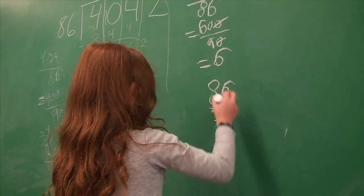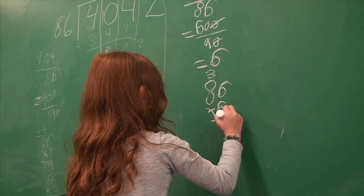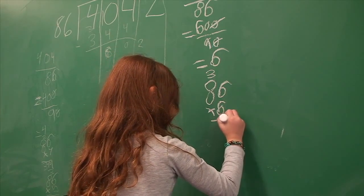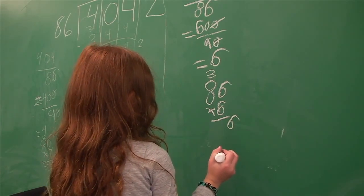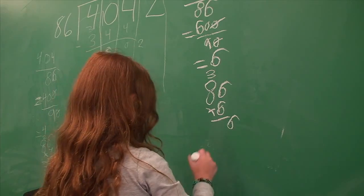6 times 6 is 36. 6 times 8 is 48, 48 plus 49, 50, 51.